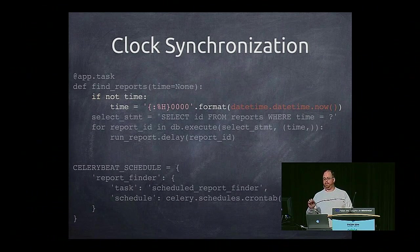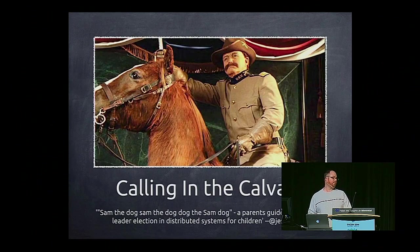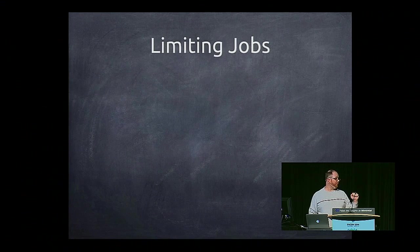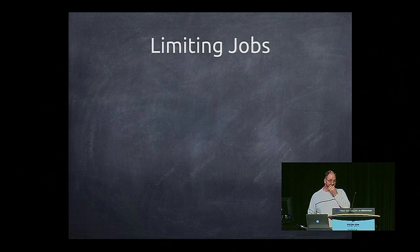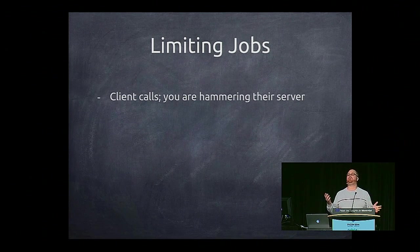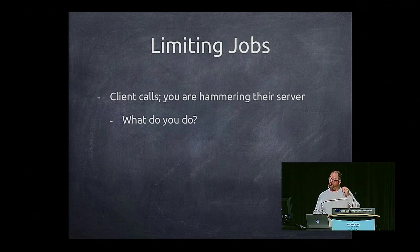Finally, we're calling in the cavalry. These are some more advanced ways to handle distributed computing to make your lives a little bit easier. First, throttling jobs. A client calls you and says you're hammering our servers — what are you going to do?